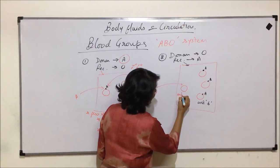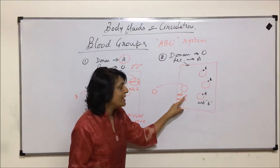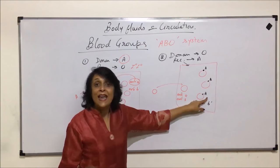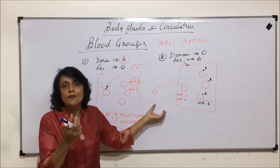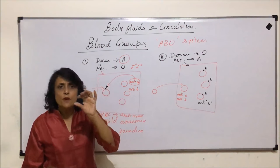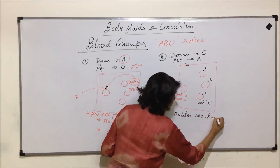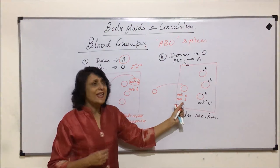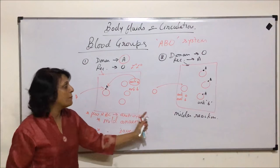The incoming plasma brings anti-A and anti-B, so there is a mild reaction between this anti-A and antigen A on the recipient's RBCs. However, because the incoming blood volume is very small — given in units of 100 milliliters or smaller — the plasma carries very few antibodies, making the reaction even milder. When antigens come in, reactions are more severe compared to when antibodies come in. That is why O can be given, and O blood group is considered the universal donor.